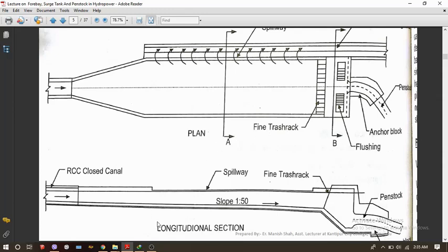In the longitudinal section you can see this is an RCC closed canal. The spillway and the slope is given as 1:50 and it varies according to the geographical and topographical conditions.